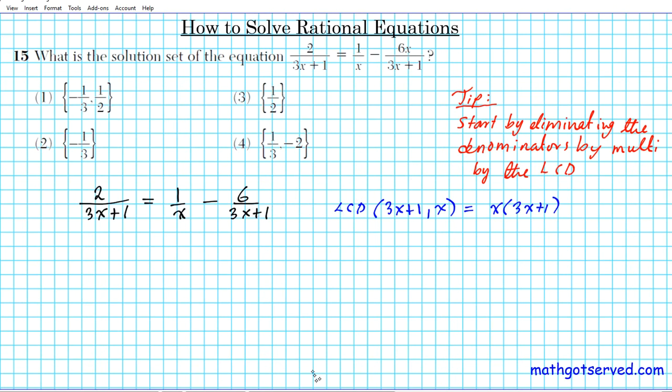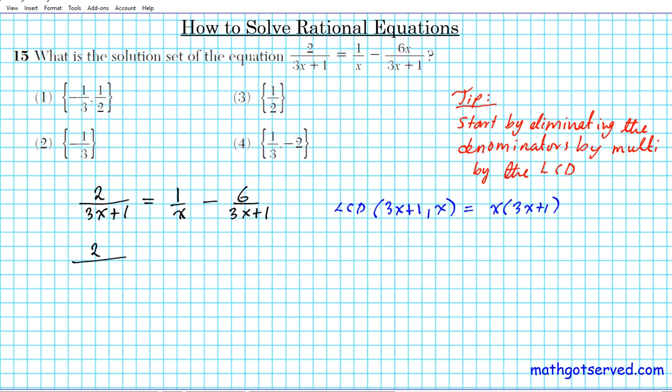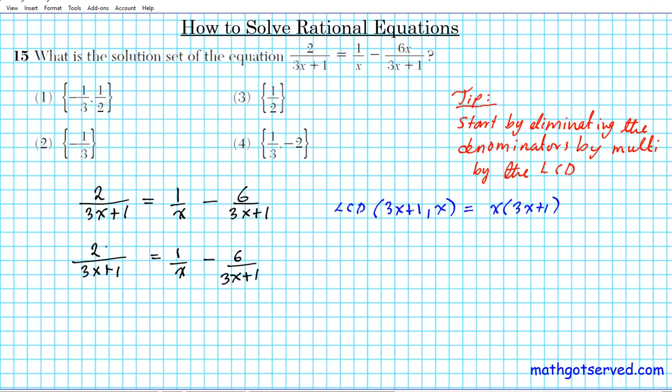So to eliminate the denominator, what I'm going to do is multiply every single term by the LCD. Let me rewrite this again, 3x plus 1, so that you can see exactly what's happening. Multiplying by the LCD, the first one we multiply by x times 3x plus 1, then the next one x times 3x plus 1, and then the last one times x times 3x plus 1.